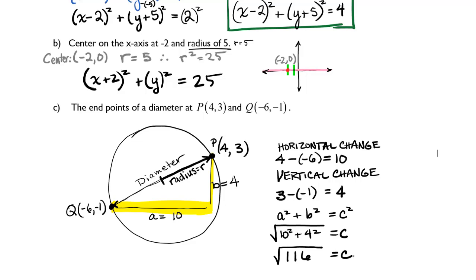If I wanted to find the radius, it would have to be one half of this. So r is equal to one half of c, the diameter, which is equal to the square root of 116 over 2. If I wanted to square this, r squared to get my formula would be 116 over 4.